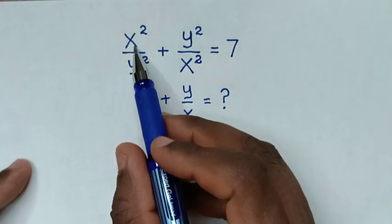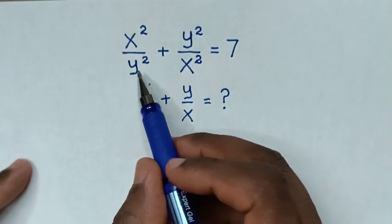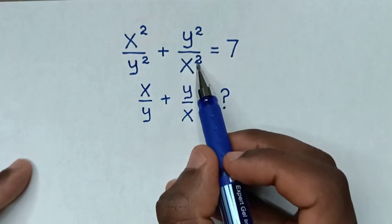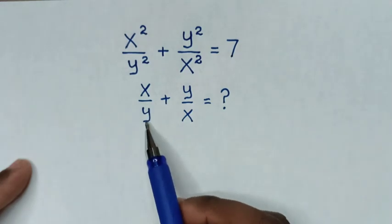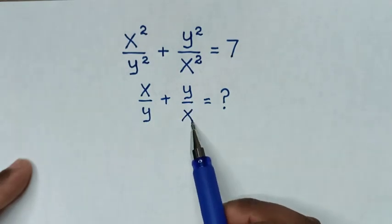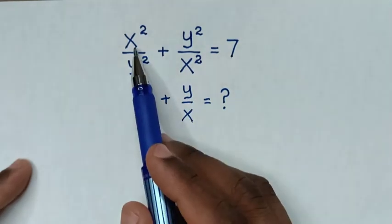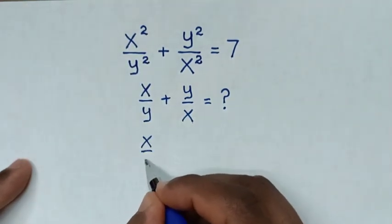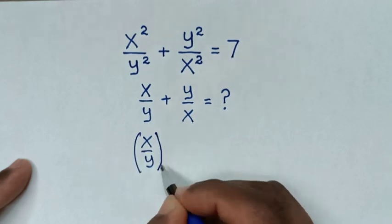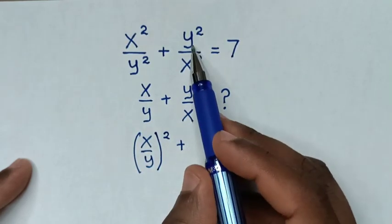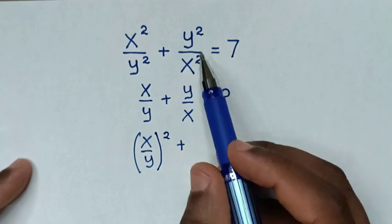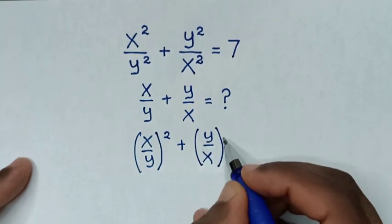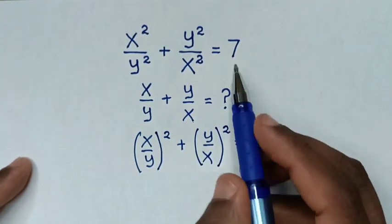Hello. How to solve x squared over y squared plus y squared over x squared equals 7, to find the value of x over y plus y over x. From here, x squared over y squared — square is common, so it will be (x/y) squared. Also, y squared over x squared — square is common, so it will be (y/x) squared, equal to 7.